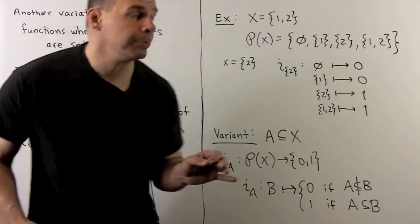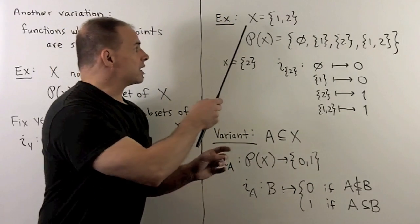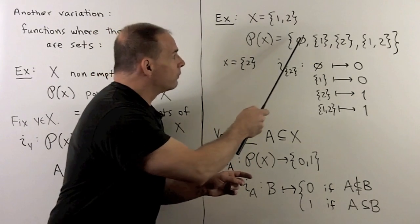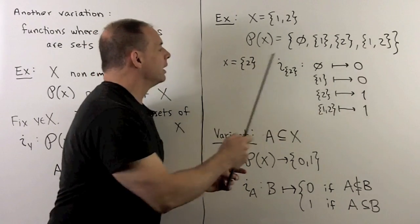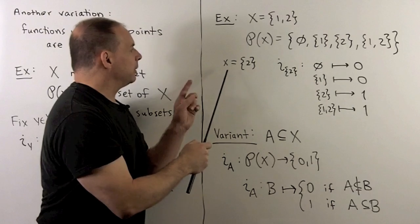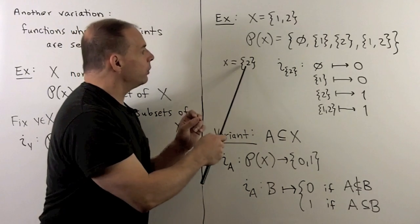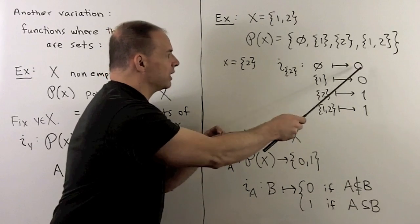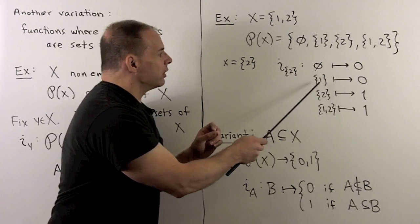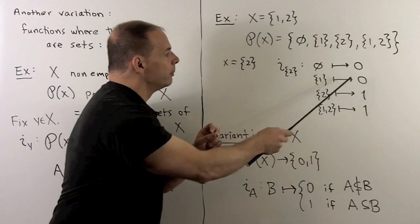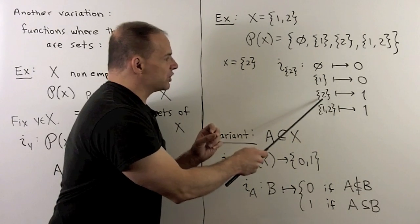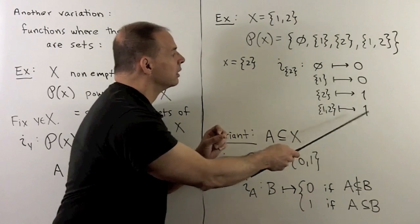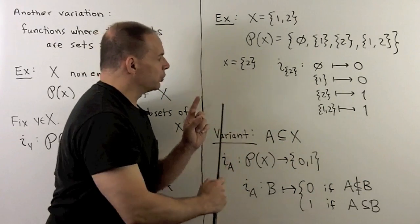For a concrete example, let's consider x to be the set 1, 2. For the power set, we'll have four subsets. If I let our point be equal to the singleton 2, i sub 2, well, is 2 in the empty set? No, so we get 0. 2 in the set consisting only of 1? No, so we get a 0. 2 is in the set consisting of just 2, and in the set with 1 and 2. So, these are both 1. So, that's how this i function works.